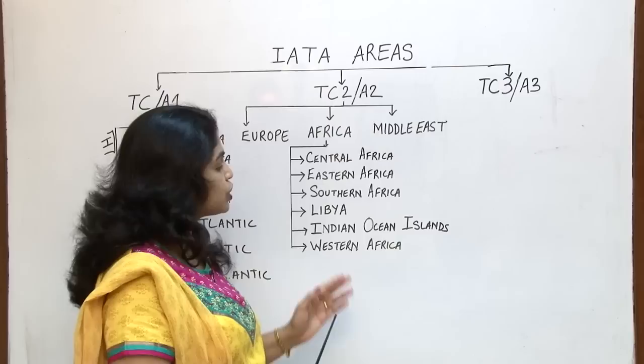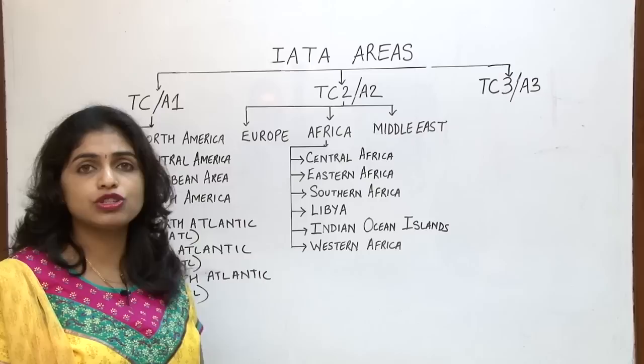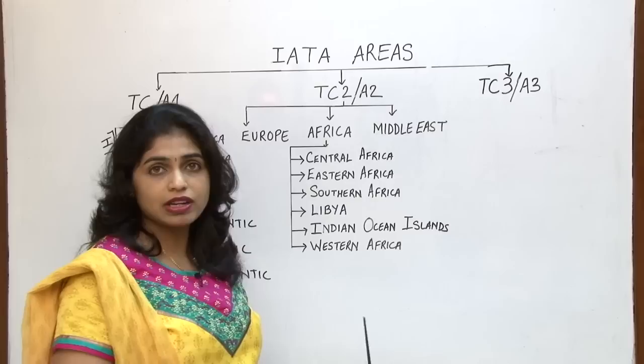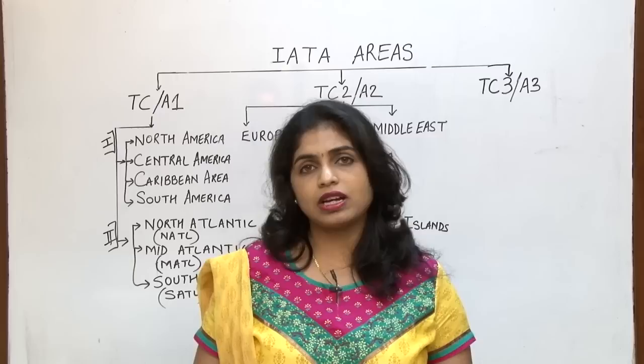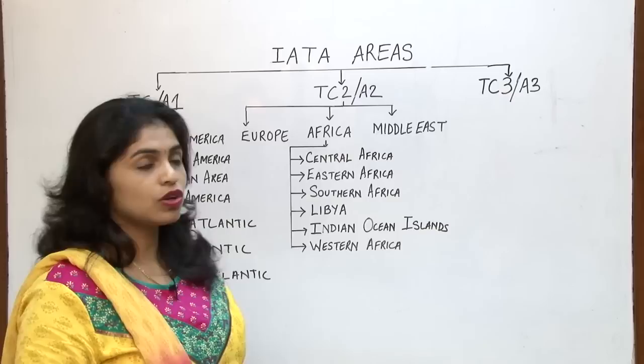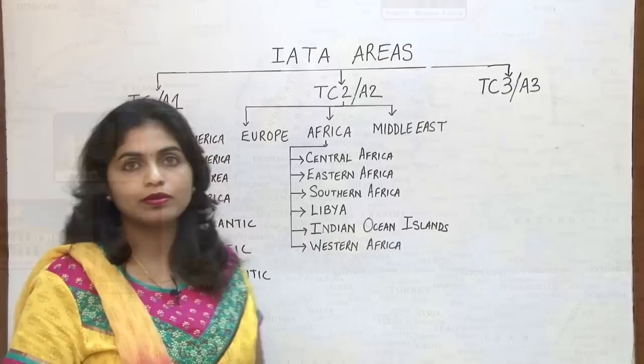So this is the entire division of how IATA area 2 gets divided: Europe, Africa (which gets divided into 6 zones), and Middle East. Let us now check the list of countries under the sub area of Europe. This is the part included in Europe — these are the countries which fall under the European continent.